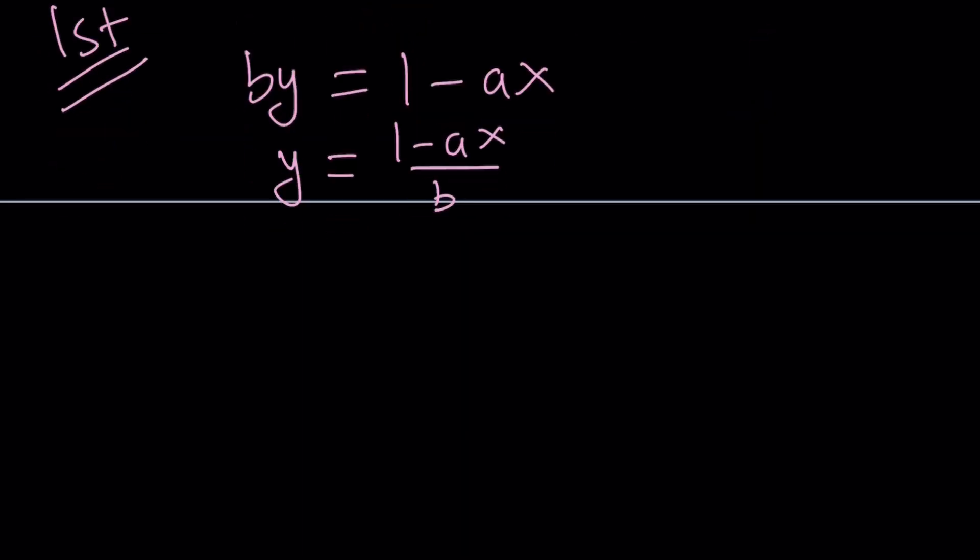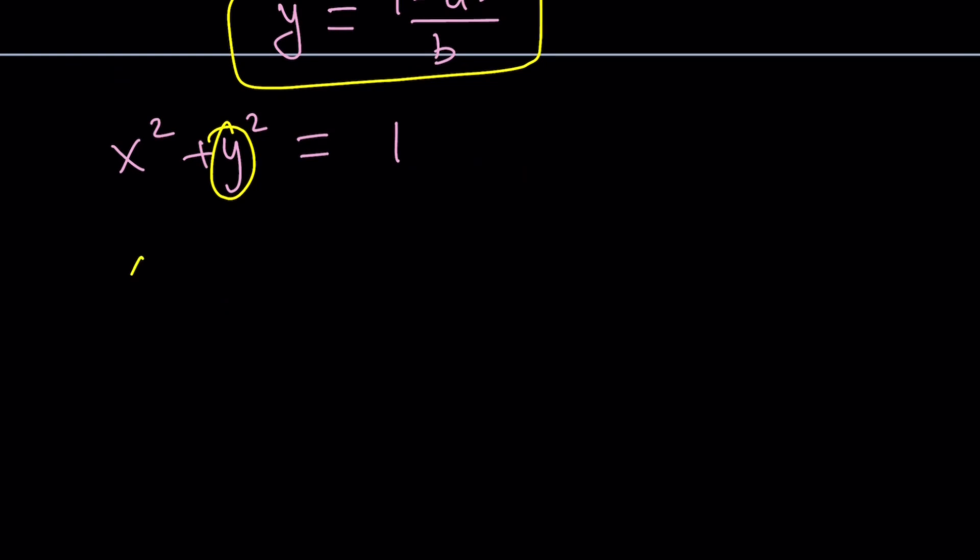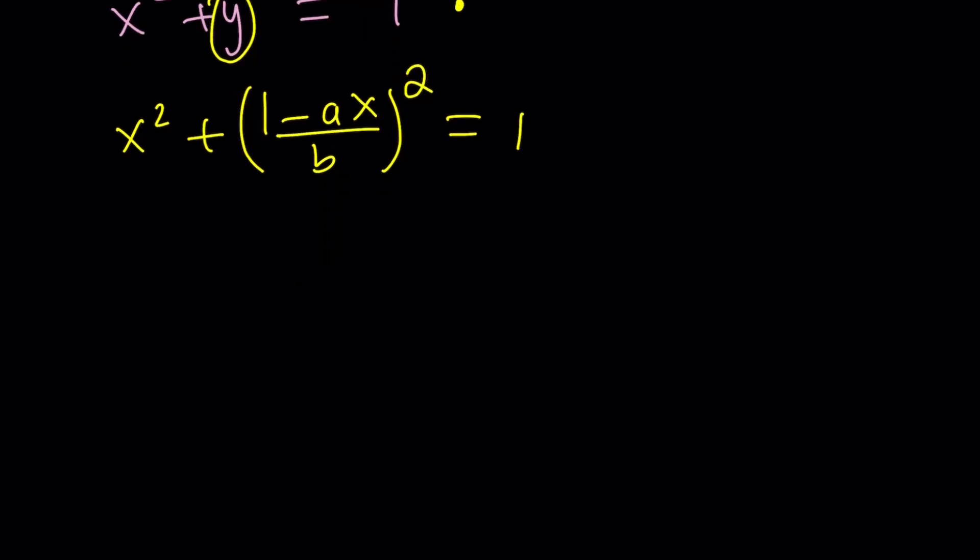So once we got the y by itself, we can go ahead and plug it into the first equation, which is the quadratic one. Now, let's go ahead and replace y with this, 1 minus ax over b. And that's actually going to give us a quadratic equation in a single variable. This is nice and a huge improvement because if you look at the original equation, you notice that there are two variables and solving it is nearly impossible. There are infinitely many solutions. But we have a condition. Now, we have a single variable.